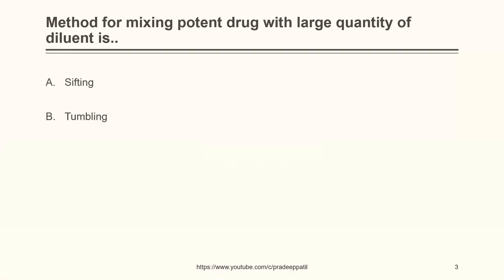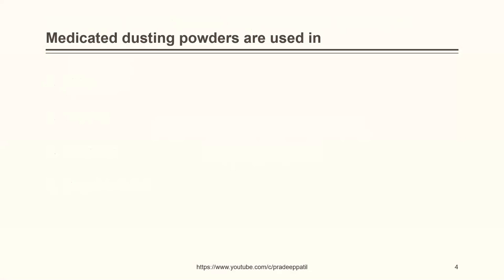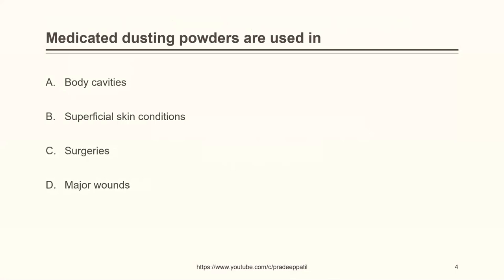Method for mixing potent drug with large quantity of diluent is: sifting, tumbling, spatulation, or geometric dilution. The right answer is geometric dilution. Medicated dusting powders are used in: body cavities, superficial skin conditions, surgeries, or major wounds. The correct answer is superficial skin conditions.